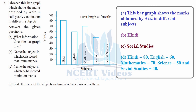Part A: what information does the bar graph give? This bar graph shows the marks obtained by Aziz in different subjects — marks secured in five different subjects. Part B: name the subject in which Aziz scored maximum marks — the highest point is 80, that is Hindi. Part C: the subject in which he scored minimum marks — the lowest bar is 40, that is Social Studies.